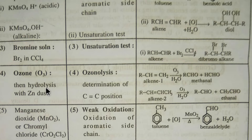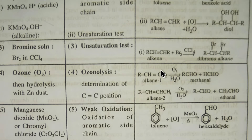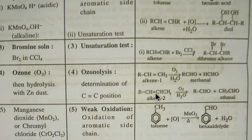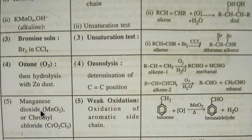Our fourth reagent is ozone. Ozone is used for the determination of the carbon-carbon double bond position. For example, if you add ozone to an alkene, you will get products such as methanal and an alkanal compound. By the position of oxygen in the products, you can easily detect the position of the double bond.